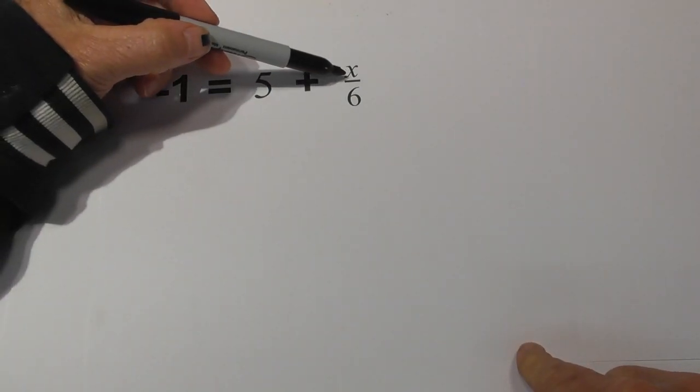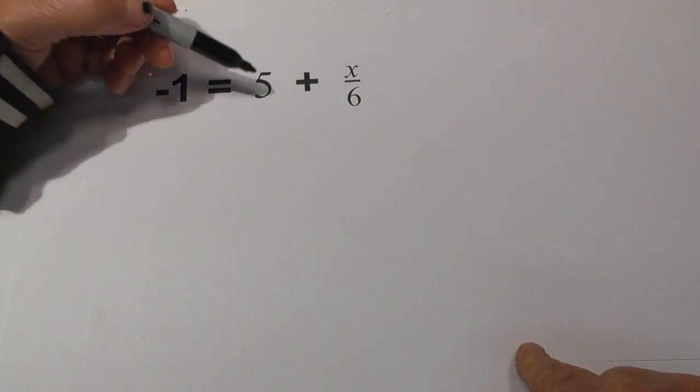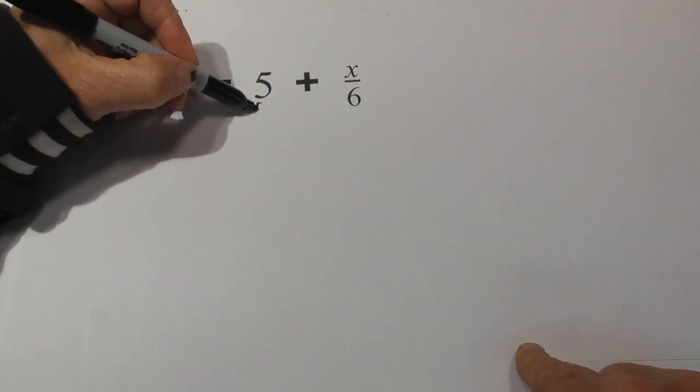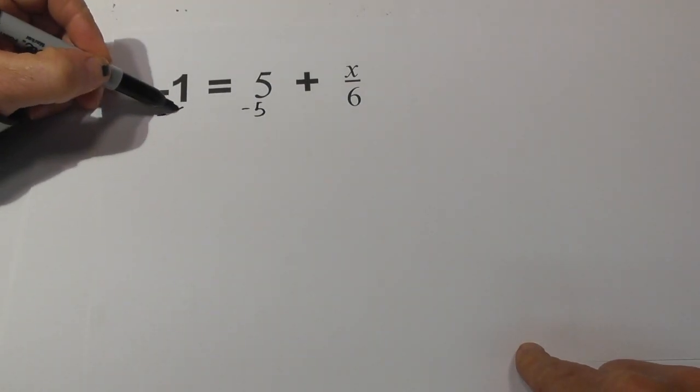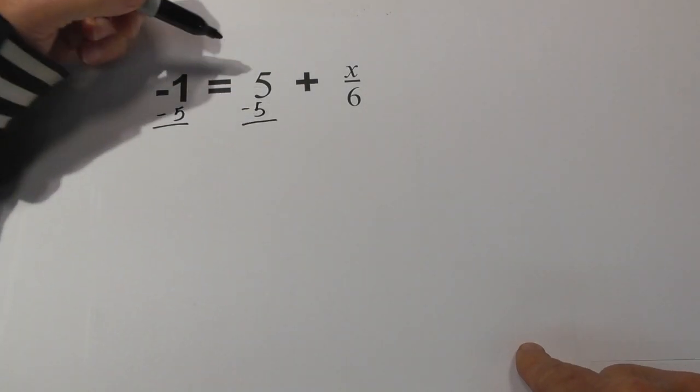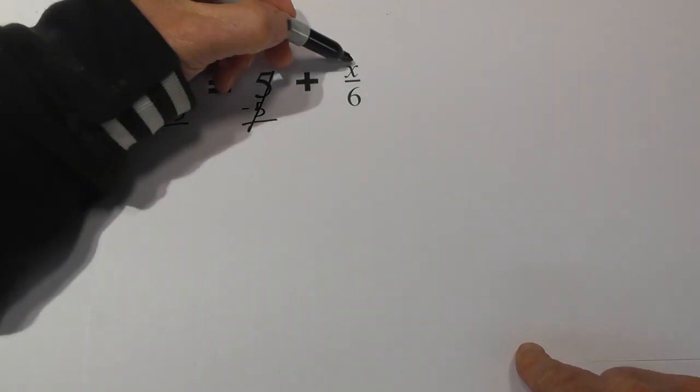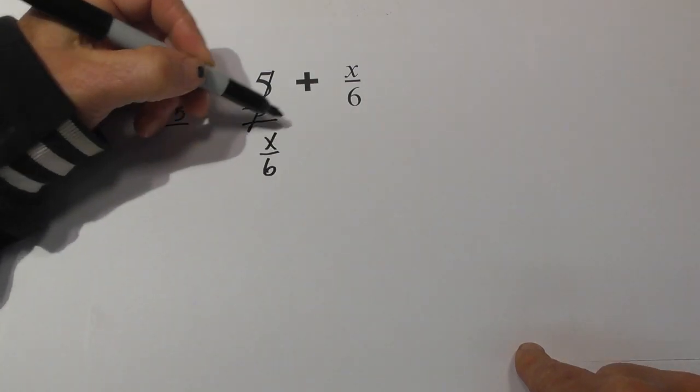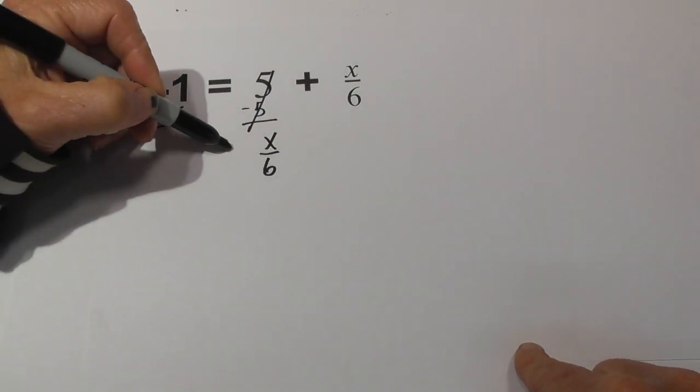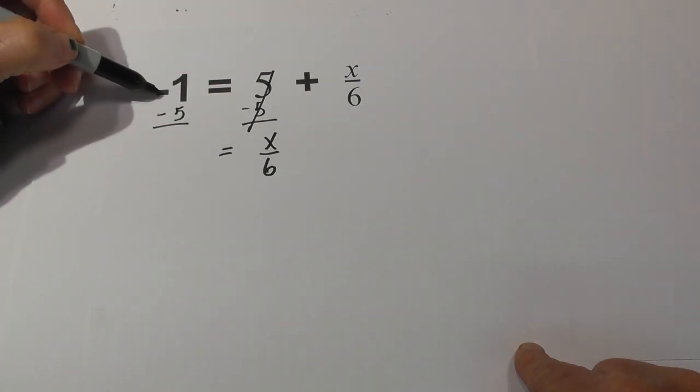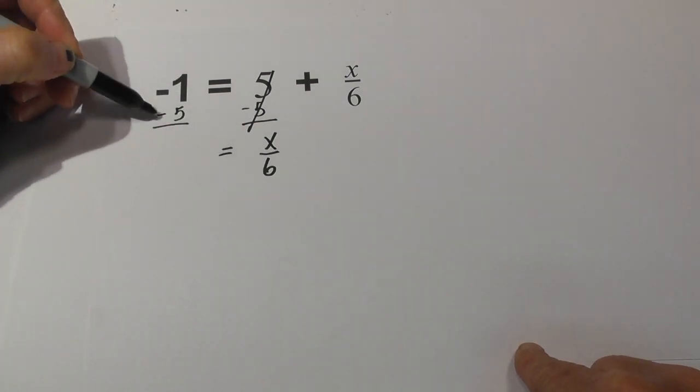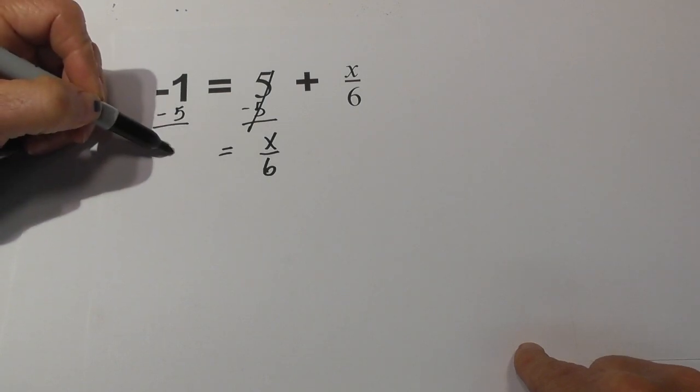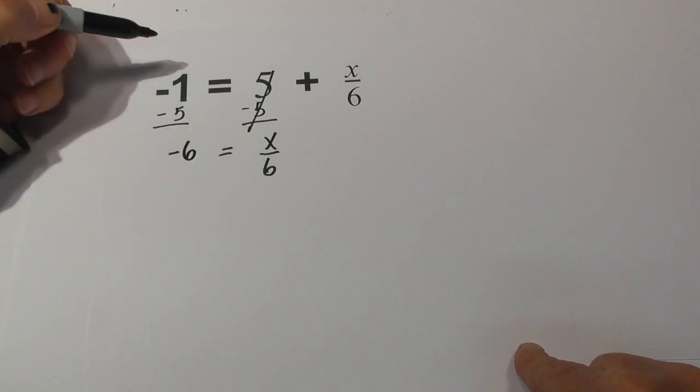Remember, we want to get the variable by itself. So we can subtract a negative 5 from both sides. And when we do this, the negative 5s cancel, bring down the x over 6. And then a negative 1 and a negative 5. Remember the signs. It's basically like adding with negative numbers. It becomes negative 6.